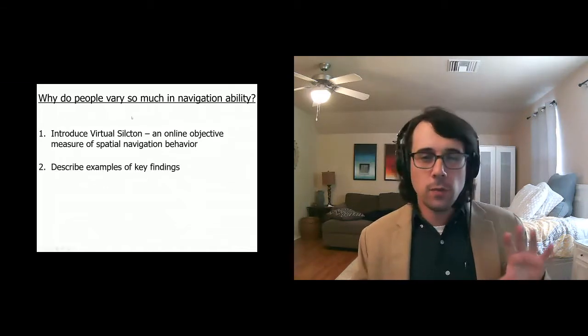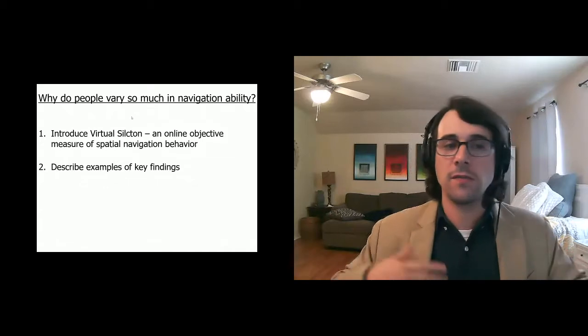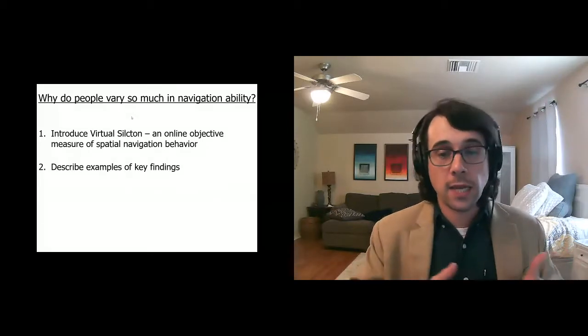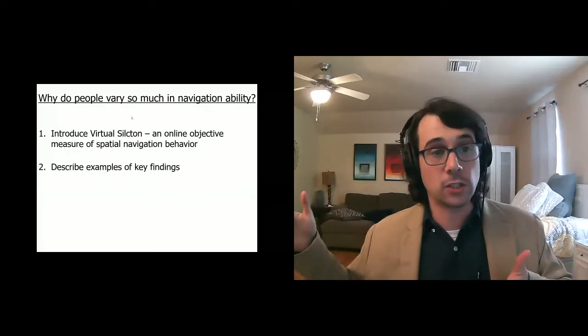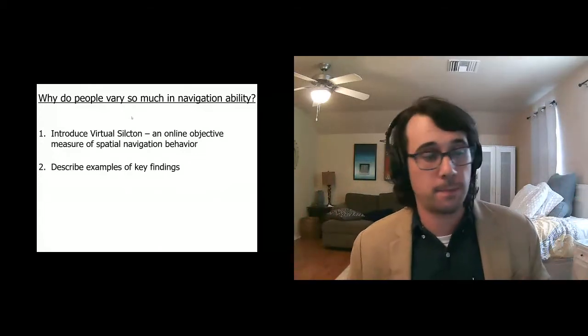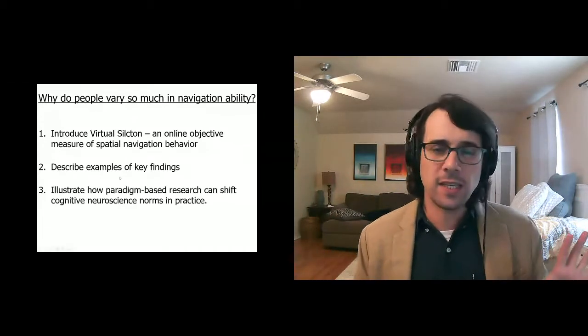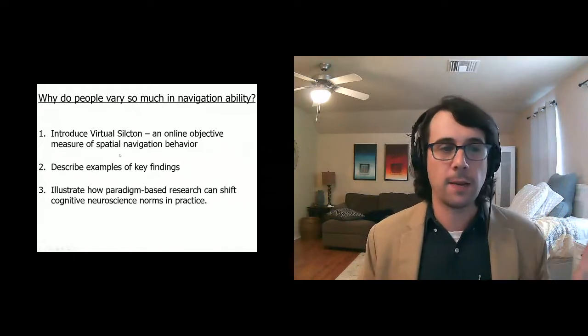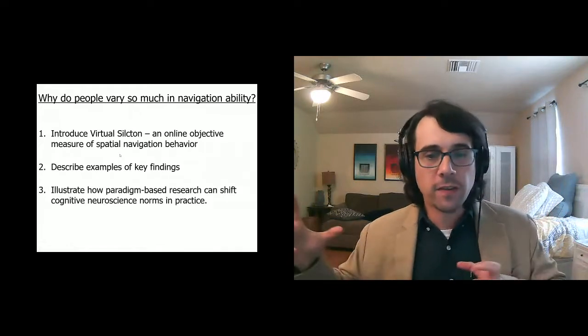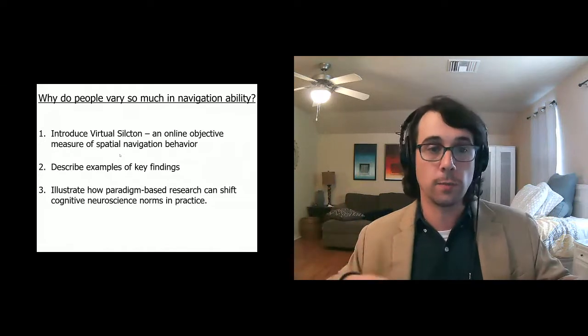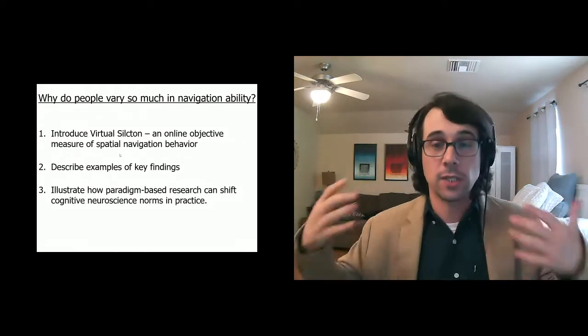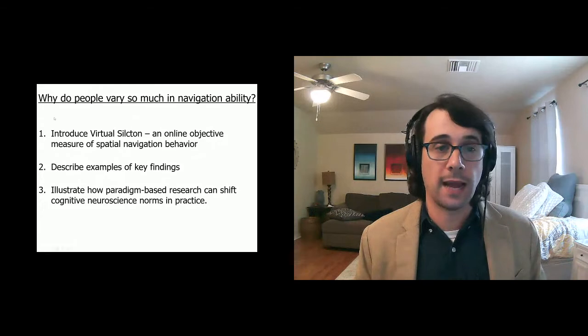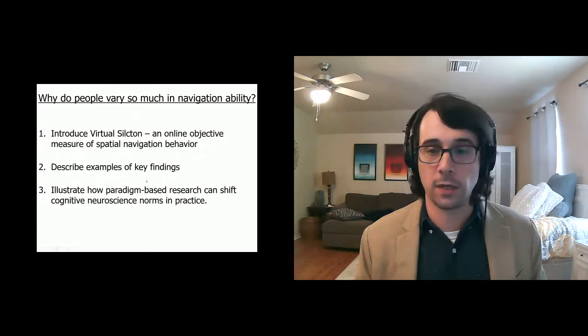So if this is the main question we're after, spoiler alert, I'm not exactly going to be answering this question today. What I'm going to do is present our approach using one tool that I've been using over the years called Virtual Silcton, which is an online objective measure of spatial navigation behavior that we think is a nice compromise in this space. Next, I'll describe a few examples of some key findings just to give you a sense of the kind of data that we get from this approach and how we've begun to extend it. And finally, at the end, I'll do what is probably a poor job of illustrating how this paradigm-based research can help shift cognitive neuroscience norms in terms of its practice. As we start to see big data collection, I think that this kind of tool will really have a home in cognitive neuroscience.